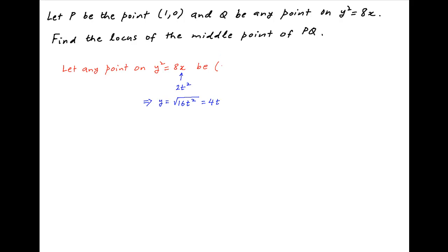Therefore, a general point on the parabola expressed in parametric form has the coordinates 2t square, 4t. Therefore, the point P is 1,0 and the point Q is 2t square, 4t.